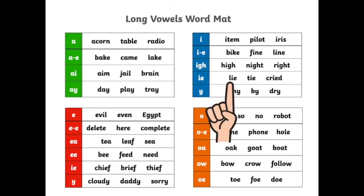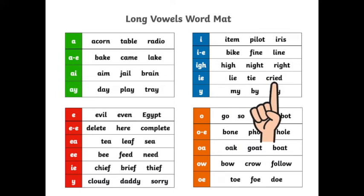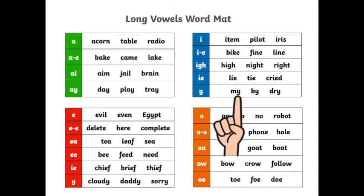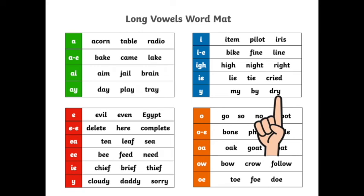L-I: Lie. T-I: Tie. Cr-I-D: Cried. And the last row here has an IE — this time it's an IE at the end of these words, not an E but an IE. M-I: My. We missed: By. D-R-I: Dry.